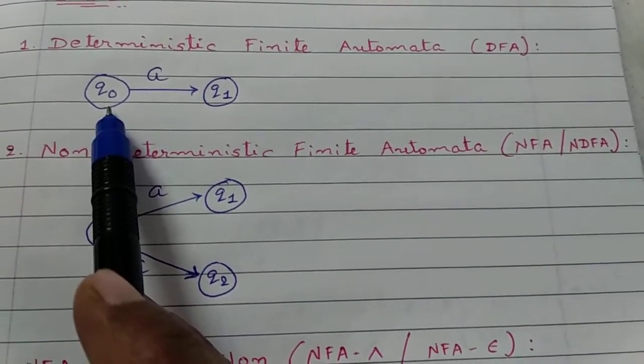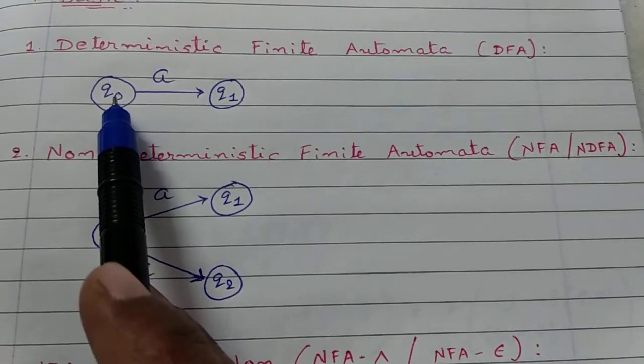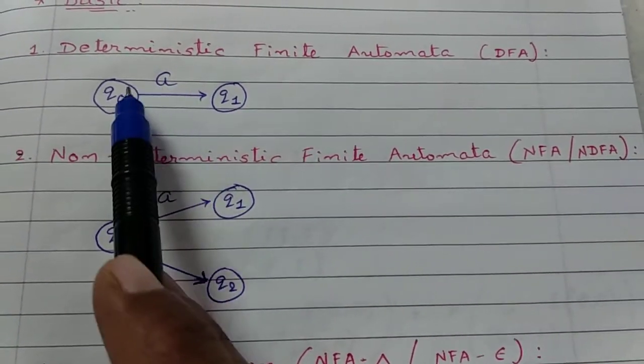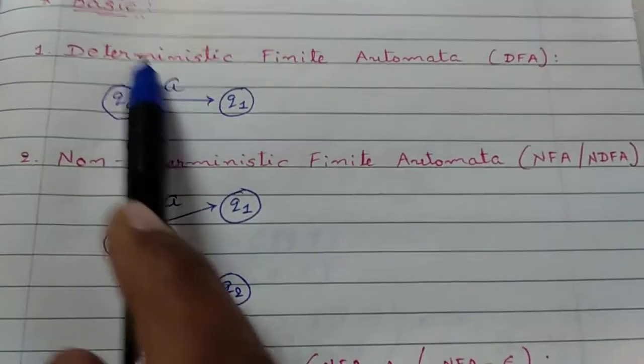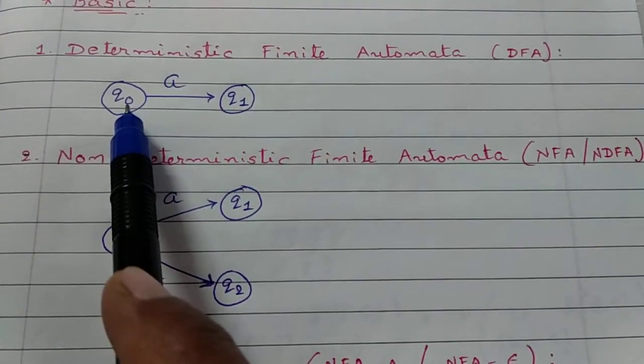For example, here you are at Q0. Q0 to A input, you reach at Q1 or it may be either Q0.